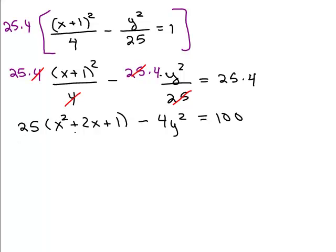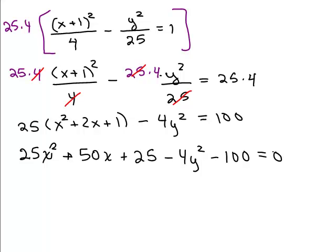So the only thing left to do is distribute the 25 and then combine all my like terms and subtract 100. So I'm getting close. 25x squared plus 50x plus 25 minus 4y squared. And I'm going to go ahead and just put minus 100 right now. Minus 100 equals 0. Because in general form, we usually set it equal to 0.